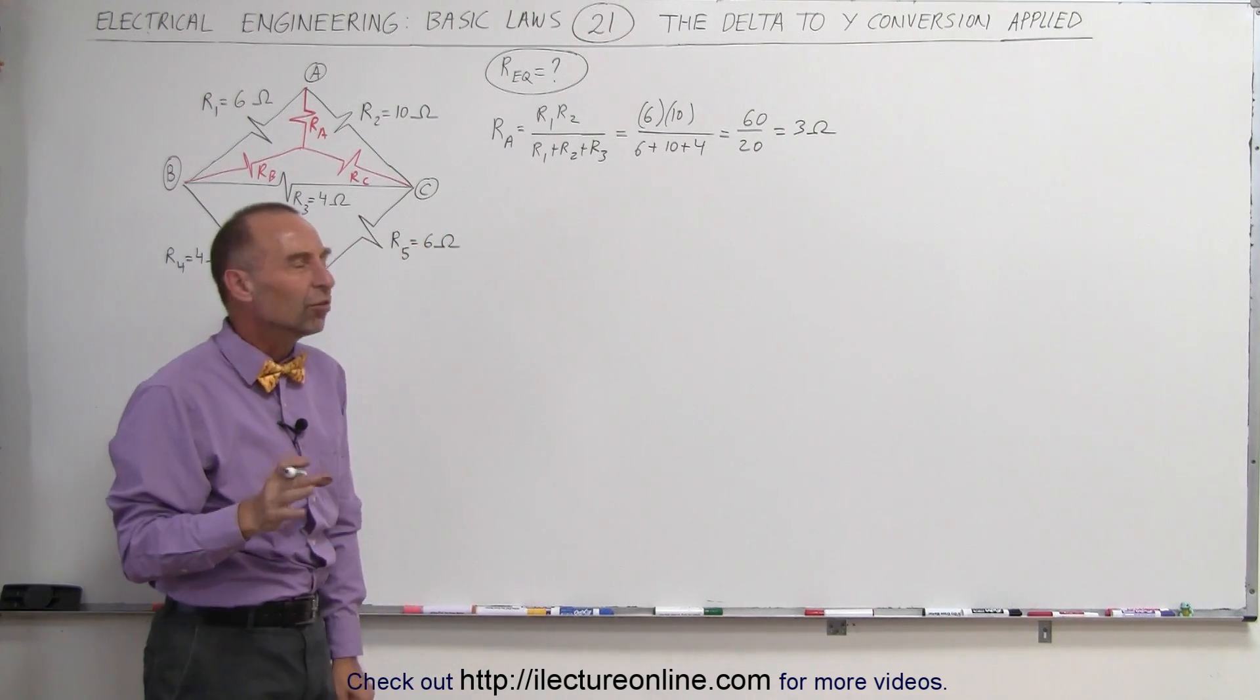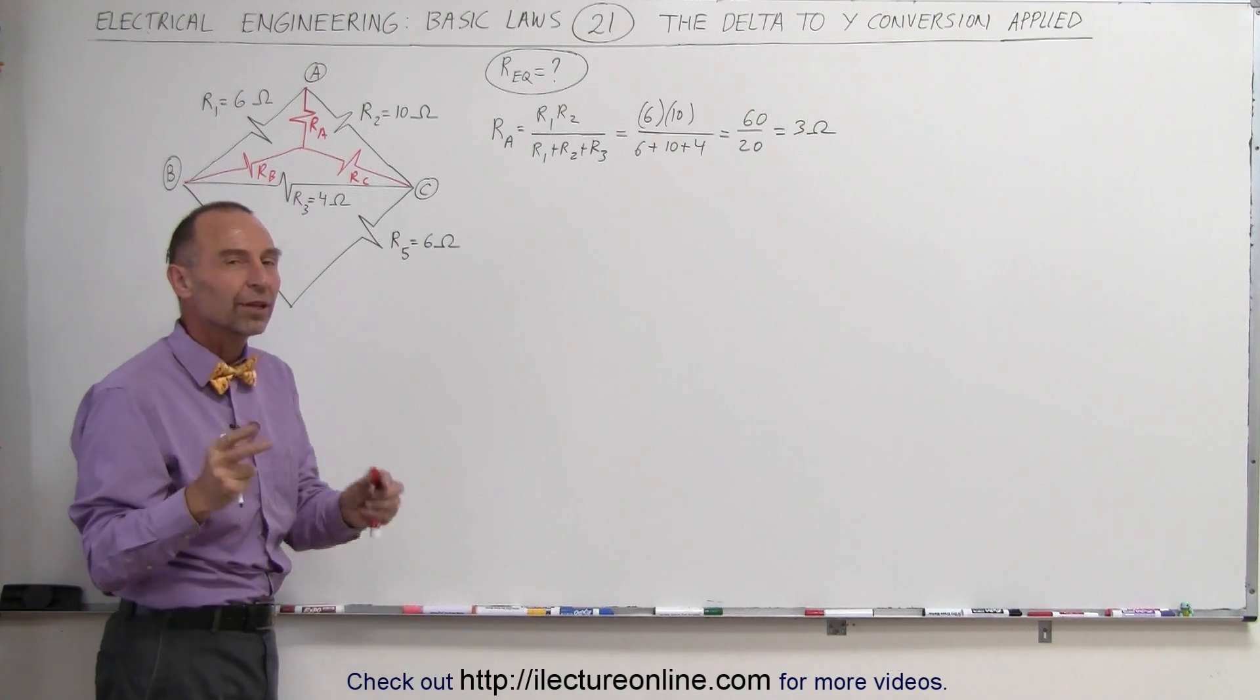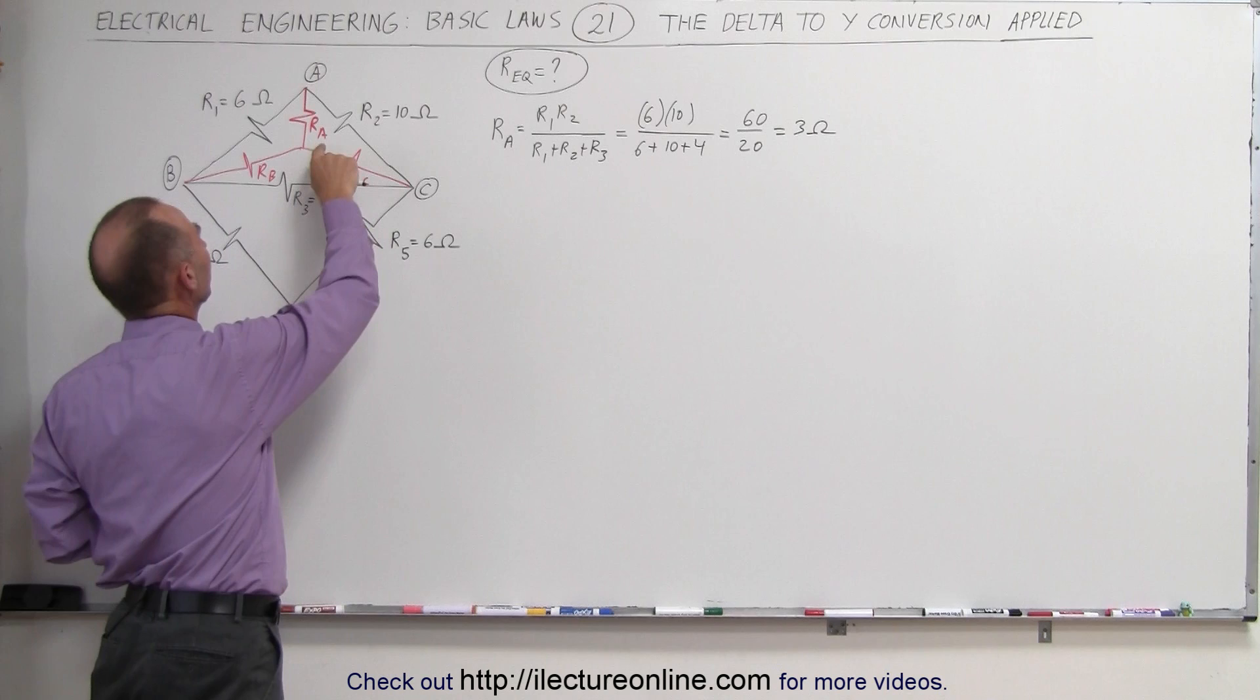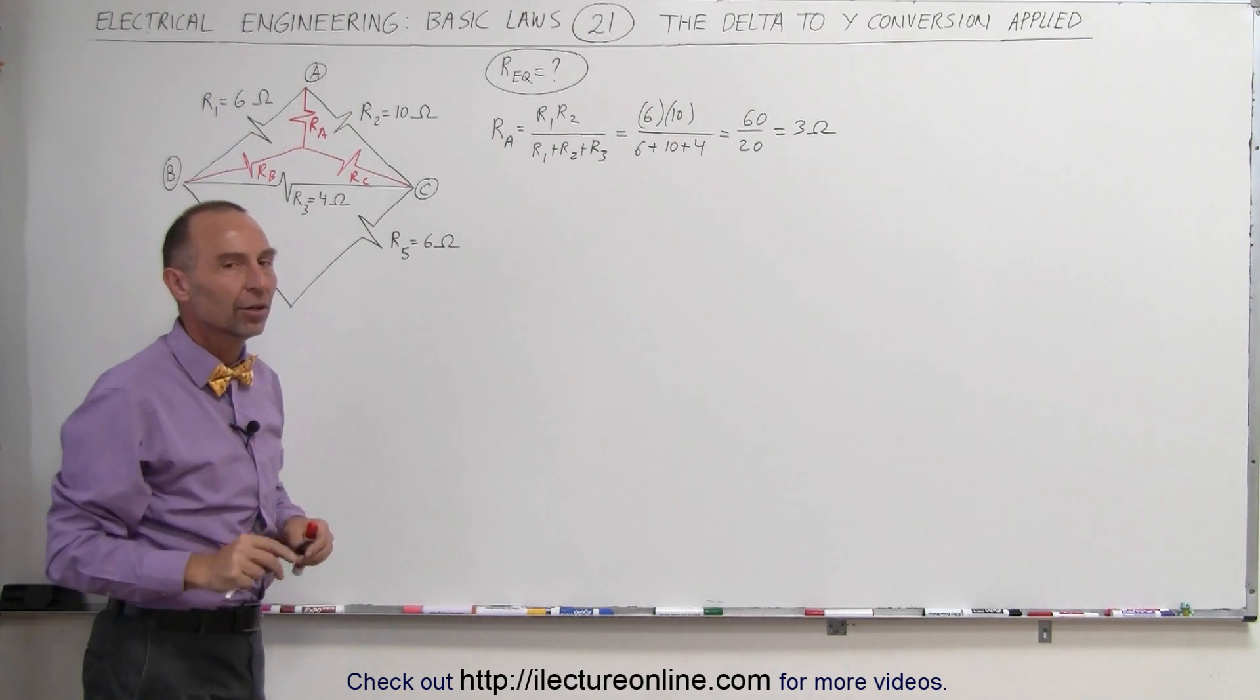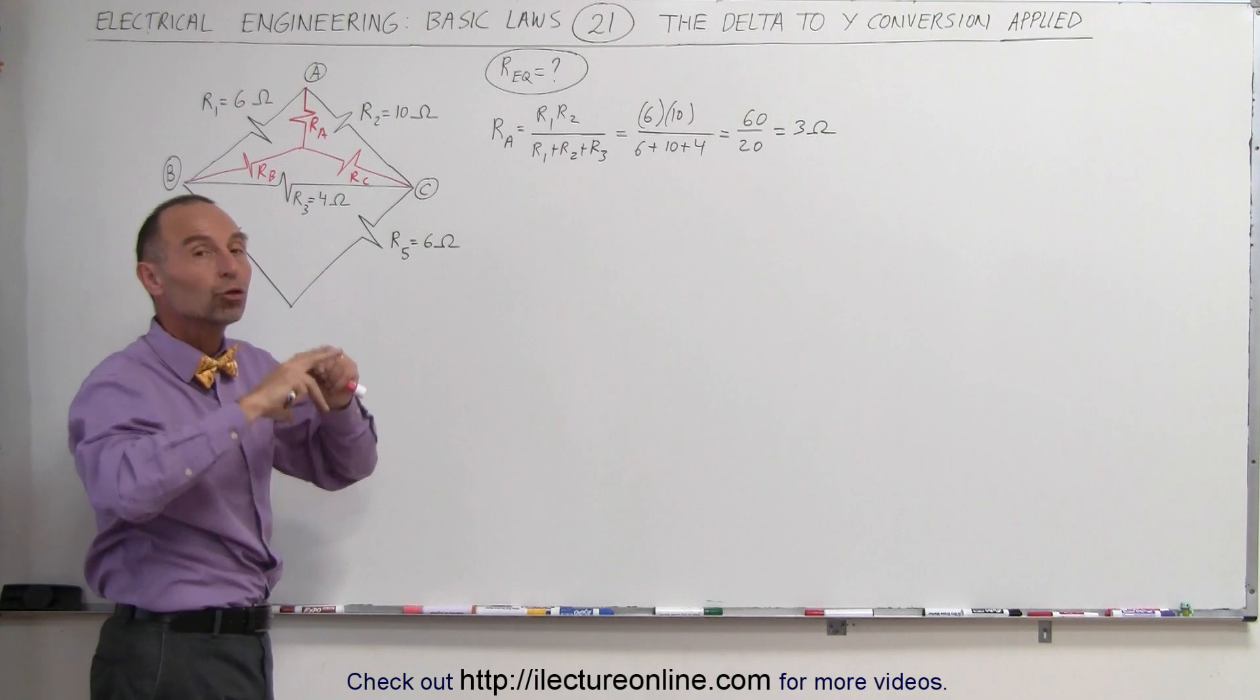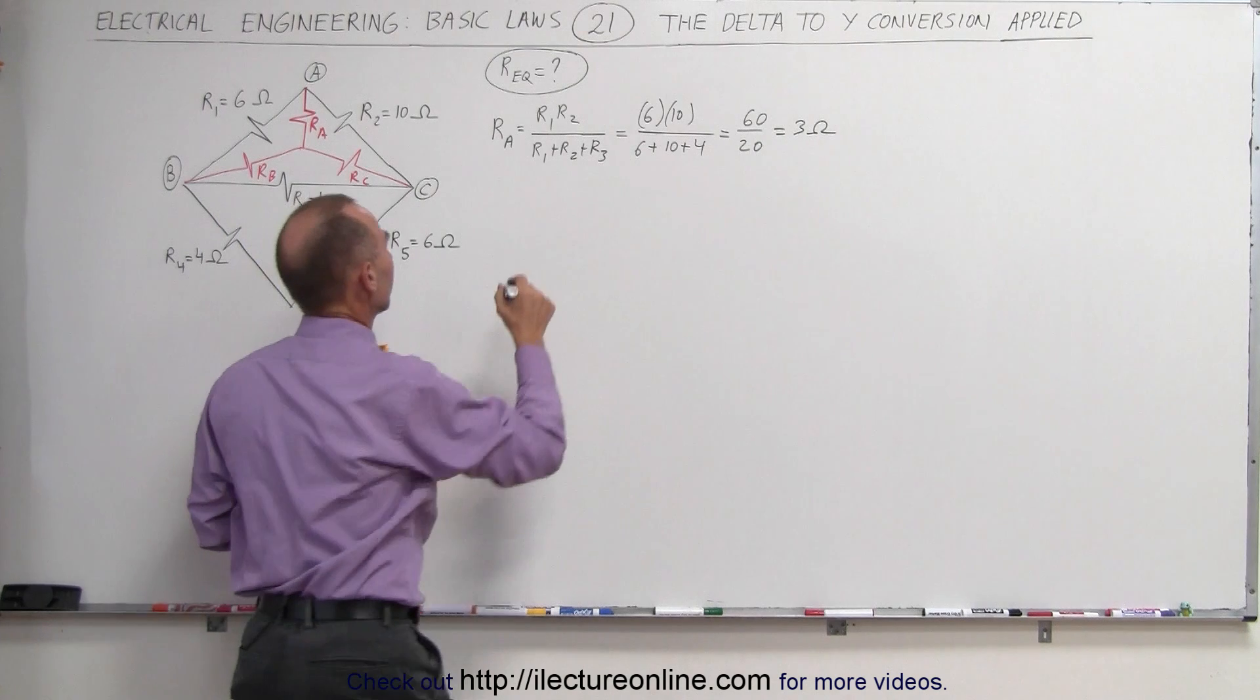I shouldn't say equivalent resistance because we're actually converting into a different format of the circuit, which will give us an equivalent resistance overall, but there's no equivalence between RA and any one of the three resistors in the delta. So we're just ending up in equivalent total circuit. We don't have an equivalence between RA and any of the other three resistors.